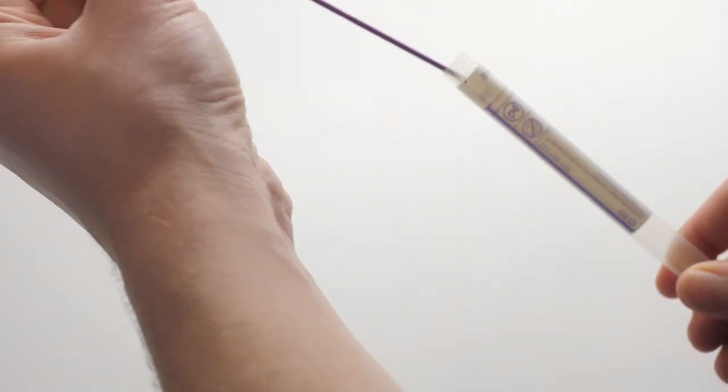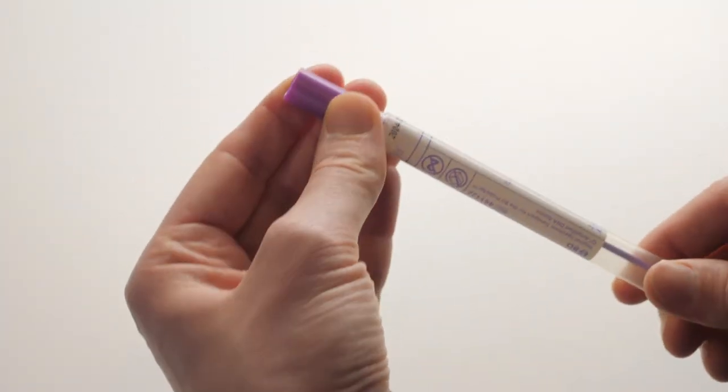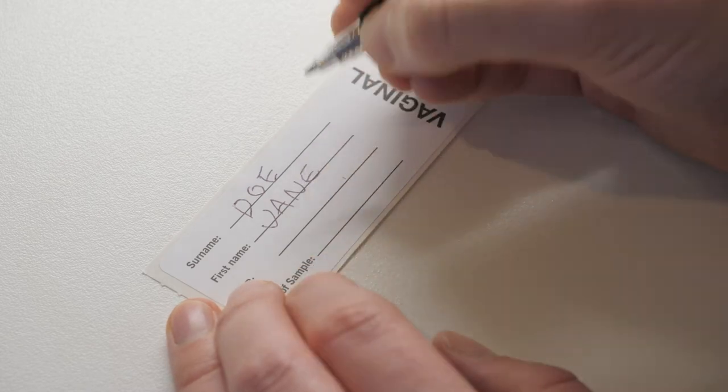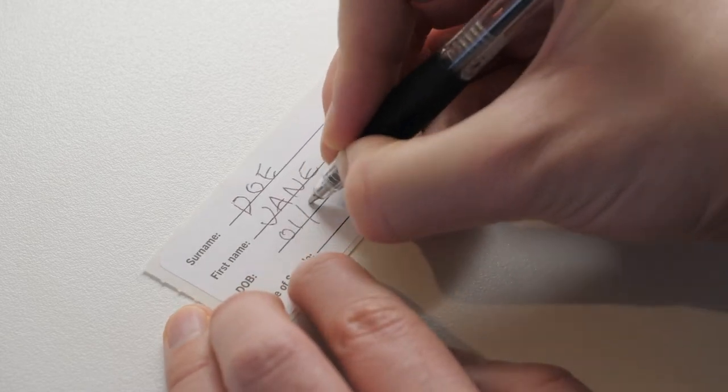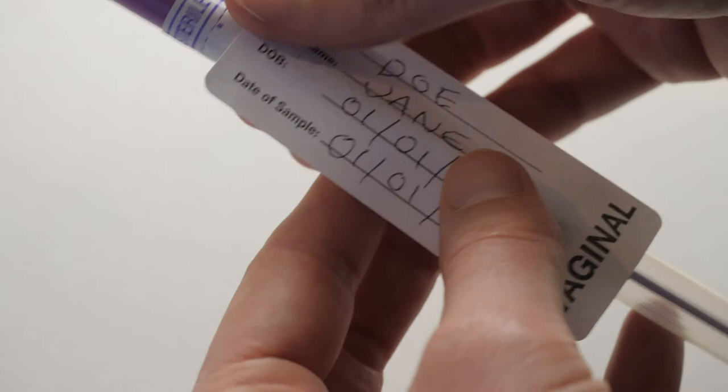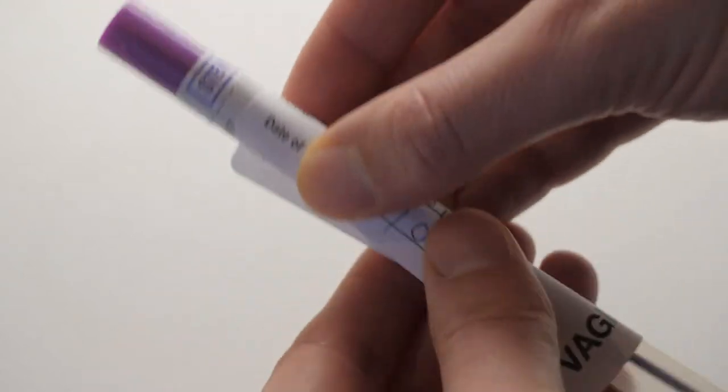Next, return the swab to the tube and tightly secure the cap. Write your full name and date of birth on the label named vaginal supplied in your pack. Affix the label by placing the tube in the middle of the label and wrapping the label around the tube.